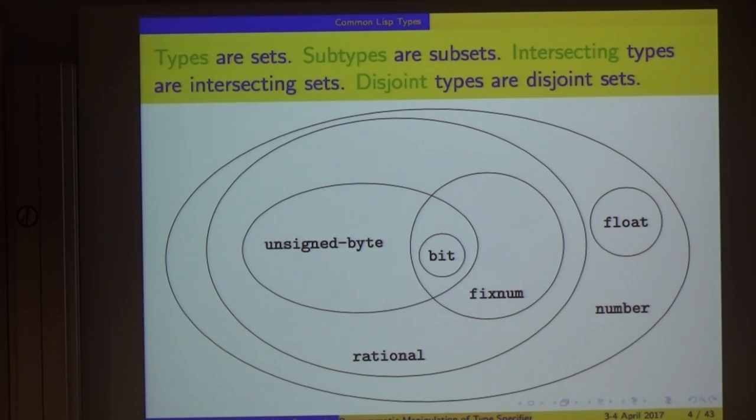Sets can be subsets of each other. Float is a subtype of number because a set of floats is a subset of a set of numbers. Types can be intersecting, such as fixnum and unsigned byte have a common intersection. Sets can be disjoint - float and fixnum. There's no object in the language both a float and a fixnum.